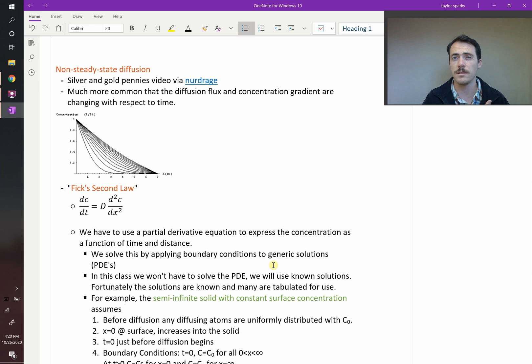We call this non-steady-state diffusion, and there are some really cool examples. I'll post links to some of these, like this one by NerdRage where he puts a little bit of zinc on the surface of a penny, and then he heats it and it very quickly diffuses because of the concentration profile. It diffuses into the copper, turning it brass-colored, and then if you keep on going, it swallows it up entirely and it changes back to normal copper-colored.